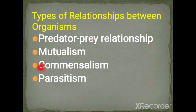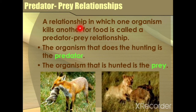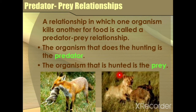There are many types of relationships between organisms. The predator-prey relationship is one in which one organism kills another for food. The organism that does the hunting is the predator, and the organism that is hunted is the prey. For example, a lion kills many animals to obtain food — the lion is the predator and the animals it eats are the prey.